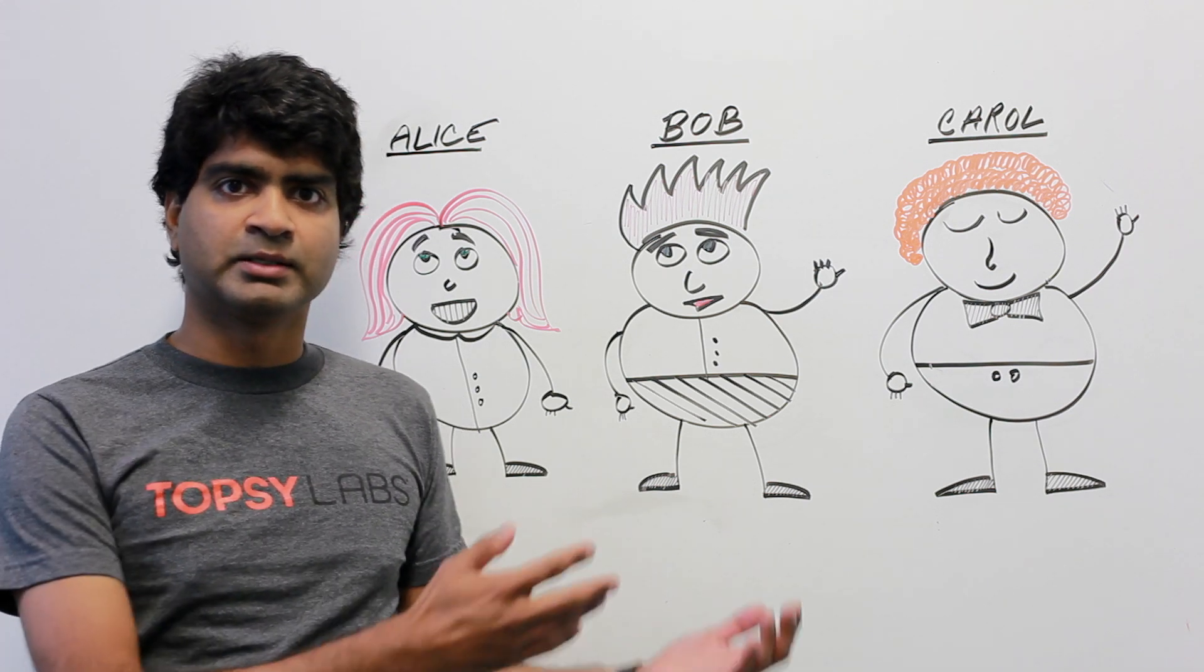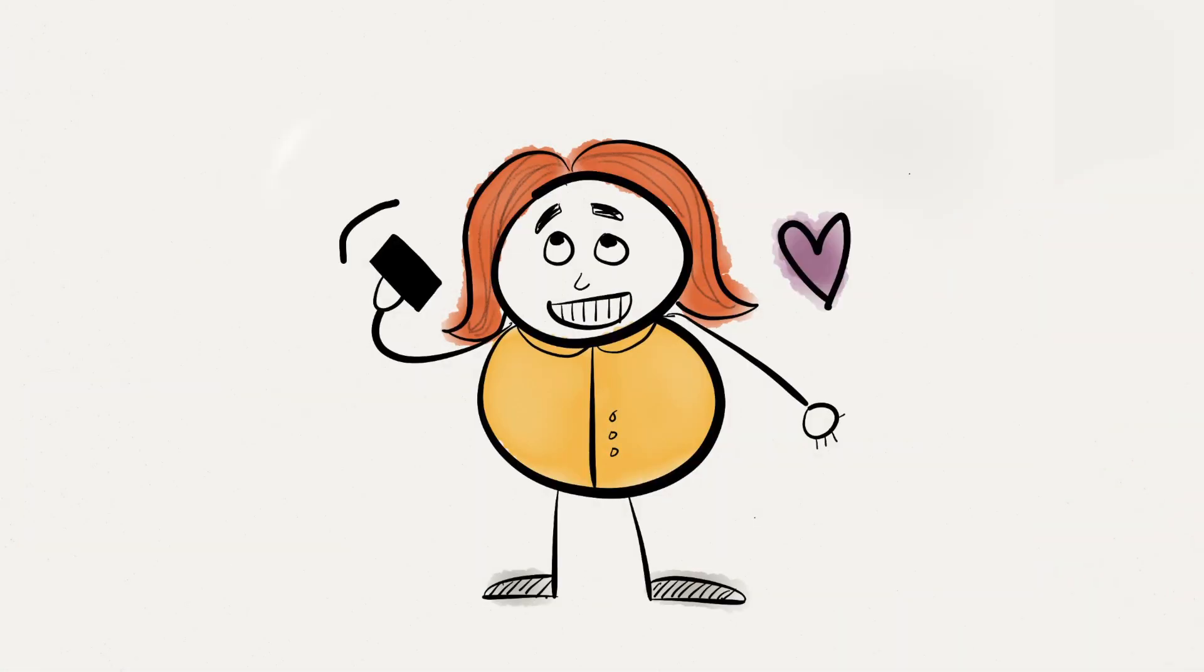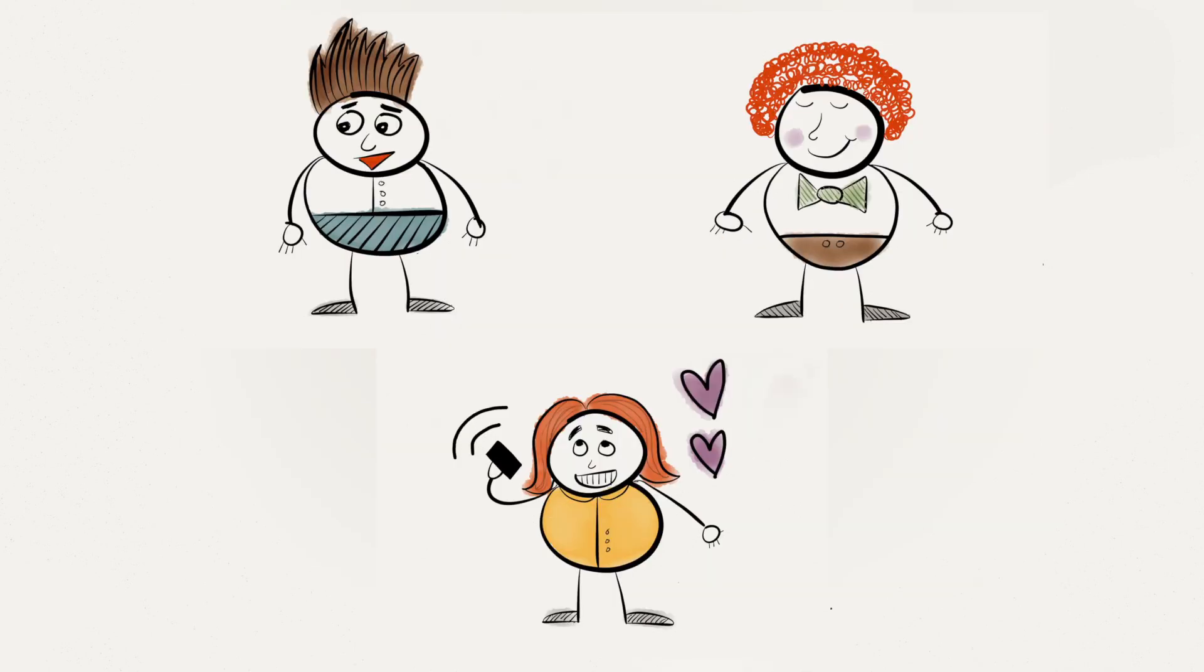Let's start with Alice, Bob, and Carol. Alice loves her new iPhone and tweets about it. Bob and Carol really like what Alice writes, and they retweet it.